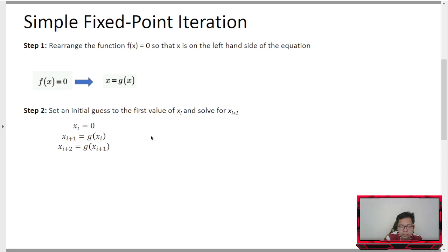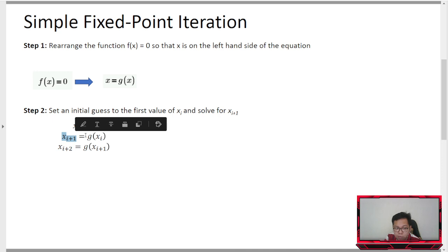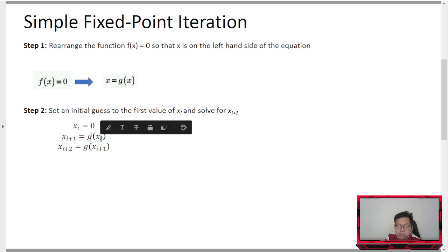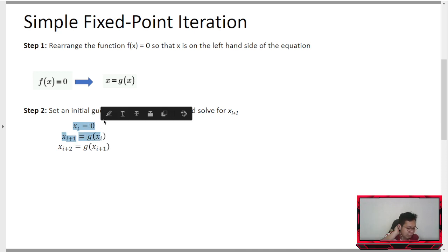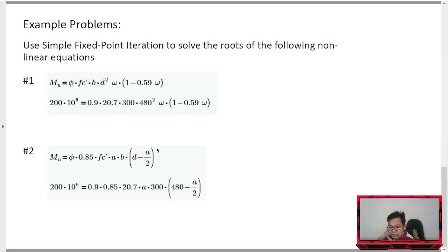Once we have our first assumption of x, we can now solve x sub i+1 — the second iteration. The value of x sub i+1 is obtained by evaluating g(x) using the current x value as input. We will try to solve the same problems from bisection and Regula Falsi to compare the number of iterations. Last time with bisection, it was actually a large number of iterations, while Regula Falsi had fewer.